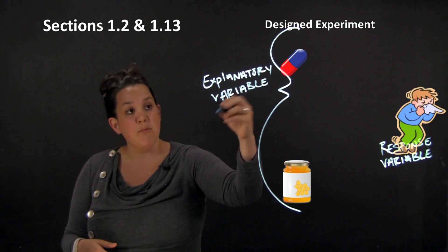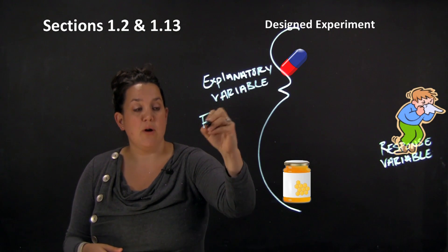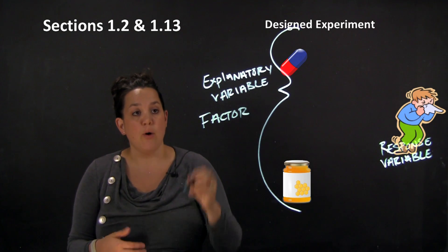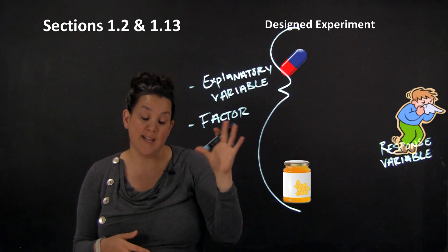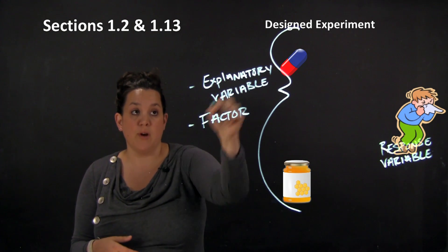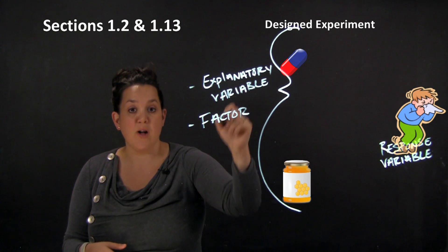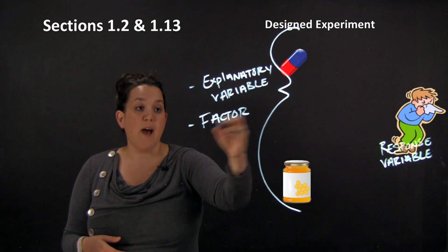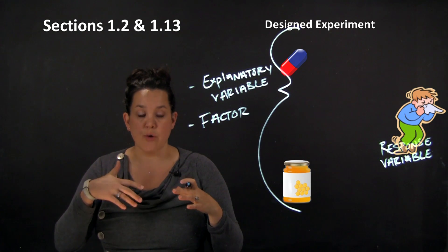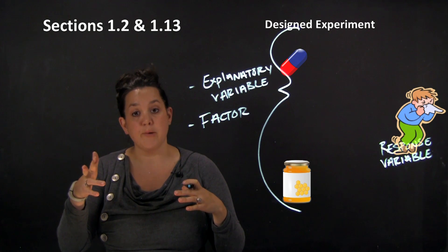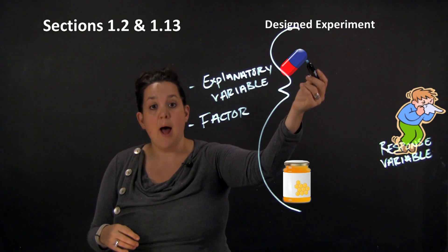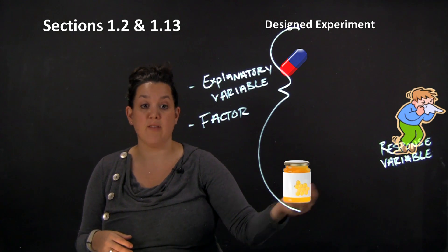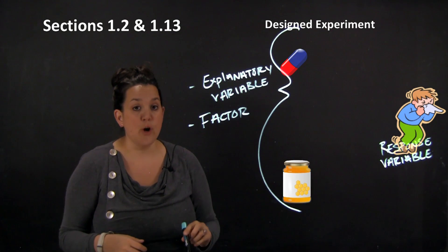In a designed experiment, explanatory variables are also sometimes referred to as factor variables — both refer to the same thing, something causing a change in our response, which is allergy symptoms. Factors have different levels, meaning the different options available to you. Here the levels are going to be either a pill or taking honey to see if that affects your allergy symptoms.